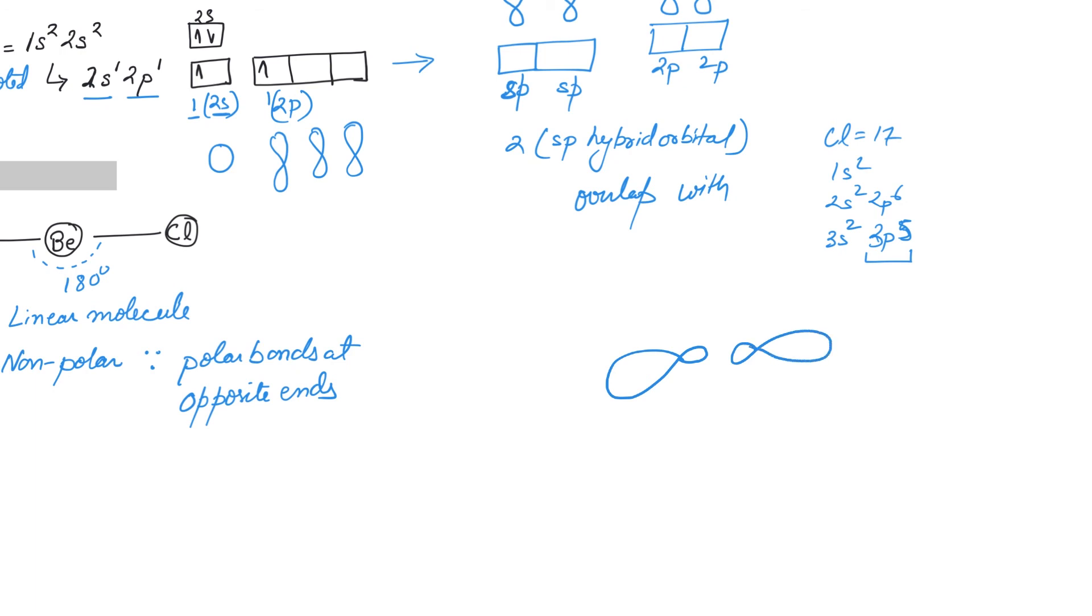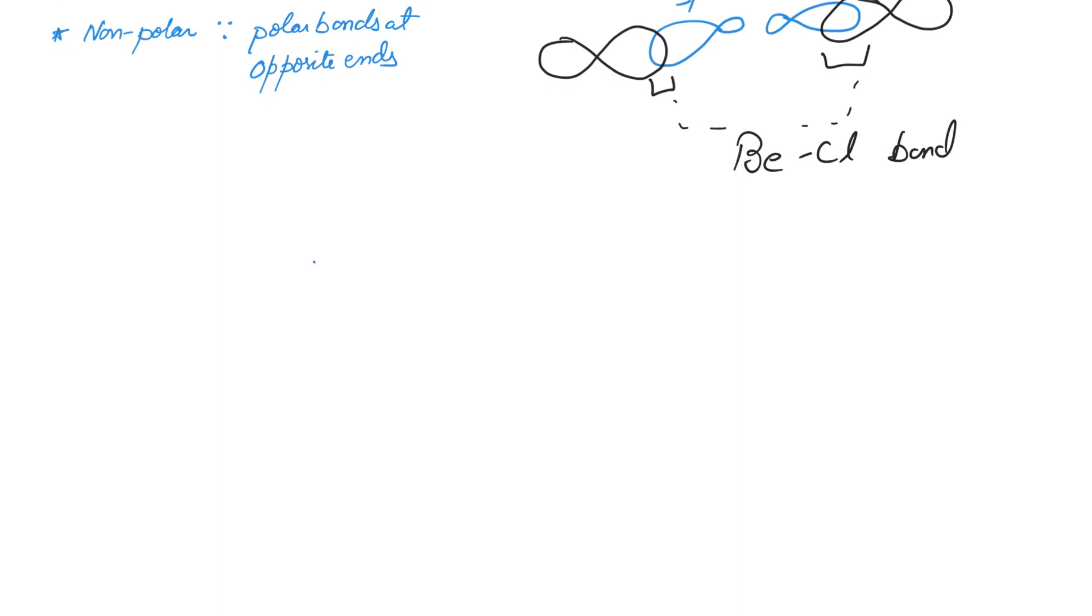This overlap here stands for the Be-Cl bond. You can clearly justify that they're equal—they're equivalent—because both of the orbitals that are combining are actually sp orbitals, not one is s and one is p.